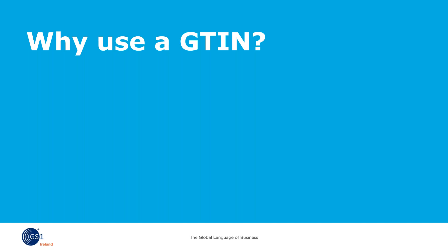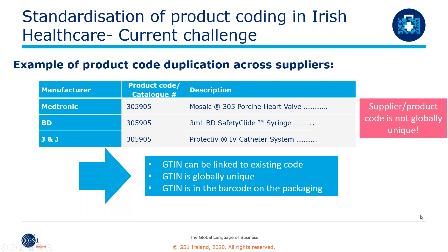Something we see come up regularly in engagement with healthcare providers is product code duplication across suppliers. This example was prepared by Medtronic, where within their own product catalogue they have six-digit codes — fairly typical of supplier codes. These aren't unique: while they might be unique within the supplier's catalogue, once they come into a hospital or healthcare provider, the same code can actually refer to different products. You can see here the same code can be a heart valve, a syringe, or a catheter system. This presents challenges for scanning, coding, reordering, replenishment, and recall within a healthcare provider.